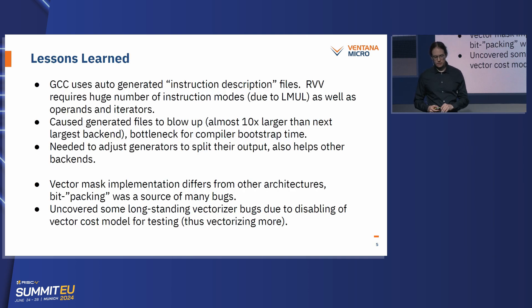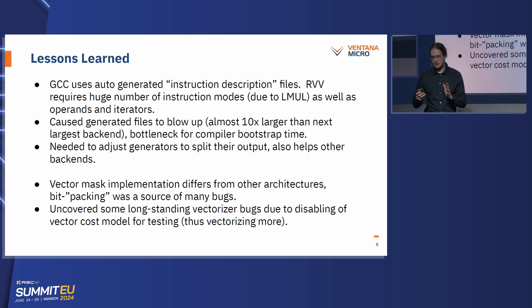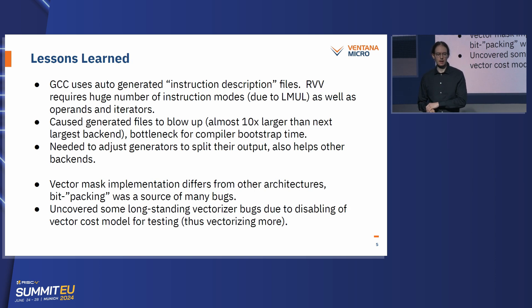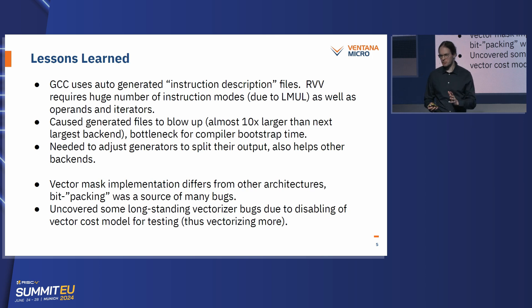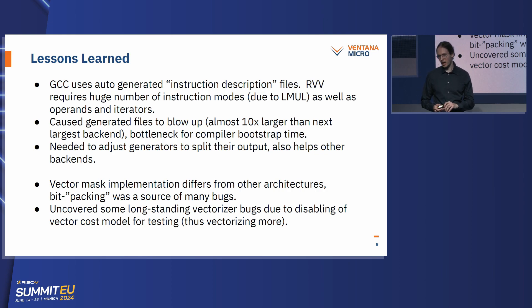Some lessons learned throughout the development. GCC uses auto-generated instruction description files — large files that help the compiler recognize certain instructions and their properties. RVV now requires a huge number of those properties and modes due to ELMO and so on, which caused the auto-generated files to blow up. At some point we had files of 20–30 megabytes, which slowed the compiler bootstrap time down to a crawl. We had to split up the generators into 10 files and perform other tricks to get it to bootstrap in a reasonable time.